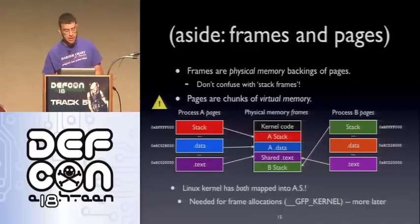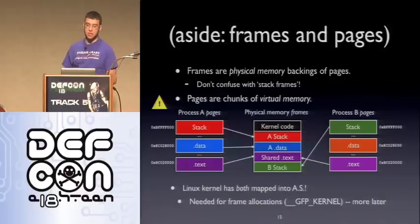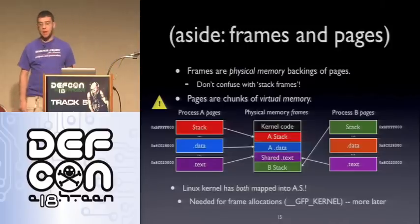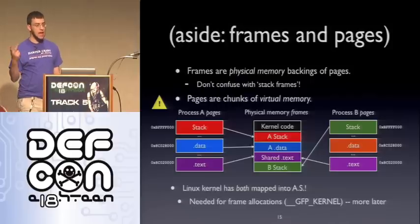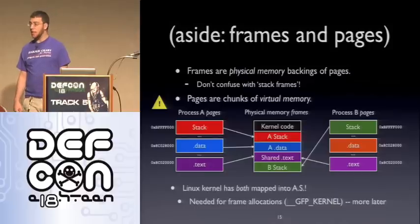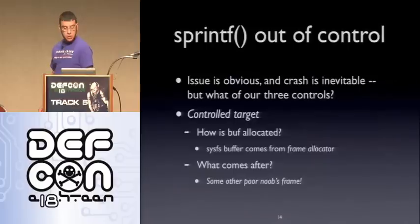The kernel also has whatever user-land process used to be running's user address space mapped in — this is to make context switches faster, take an OS course. The upshot is that you need user memory to be accessible if you want to do things like read, write, or ioctl. And you need kernel memory accessible if you want to do frame allocations — to get a DMA buffer for the hard drive, for instance. So that was how the buffer allocation works.